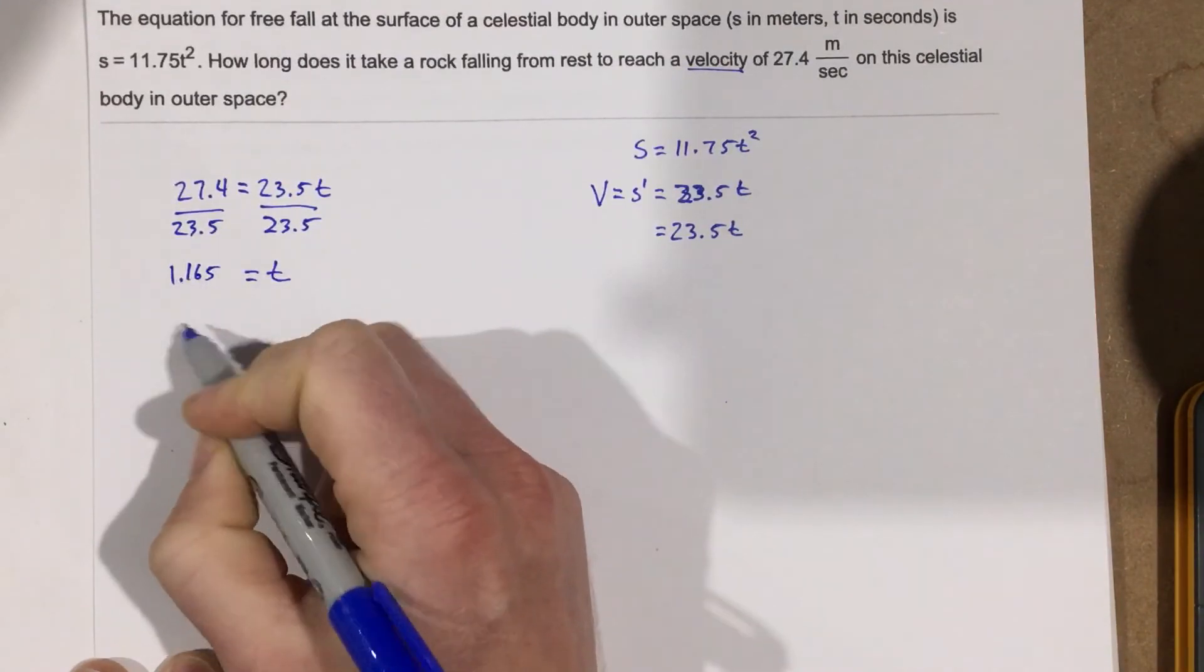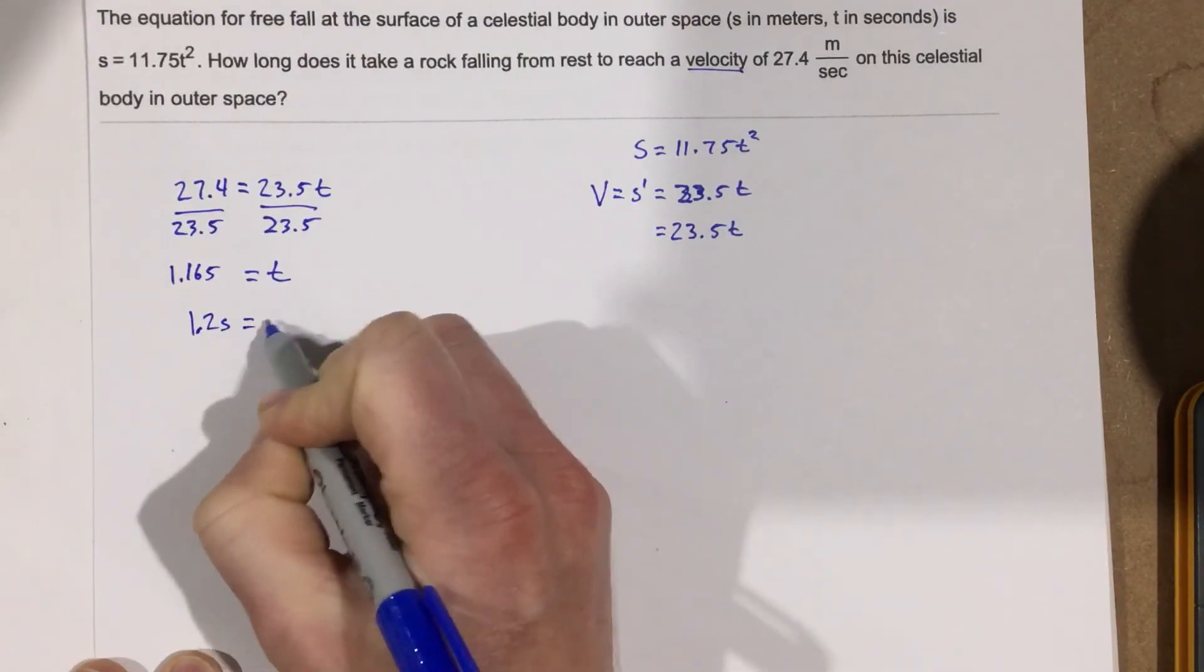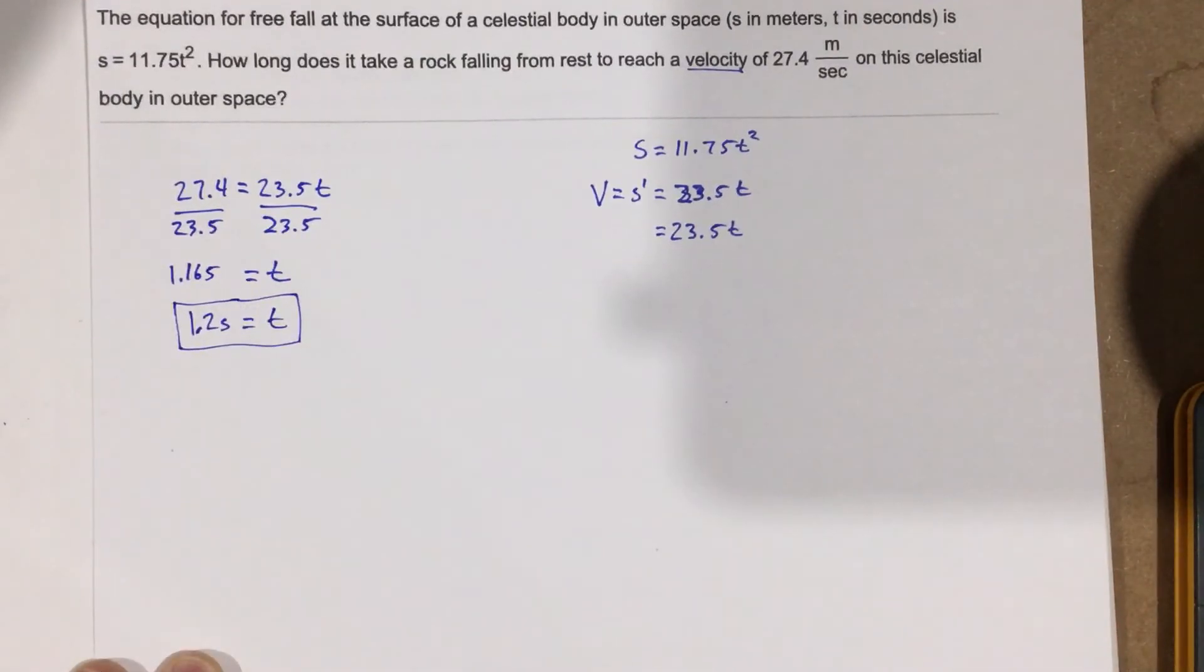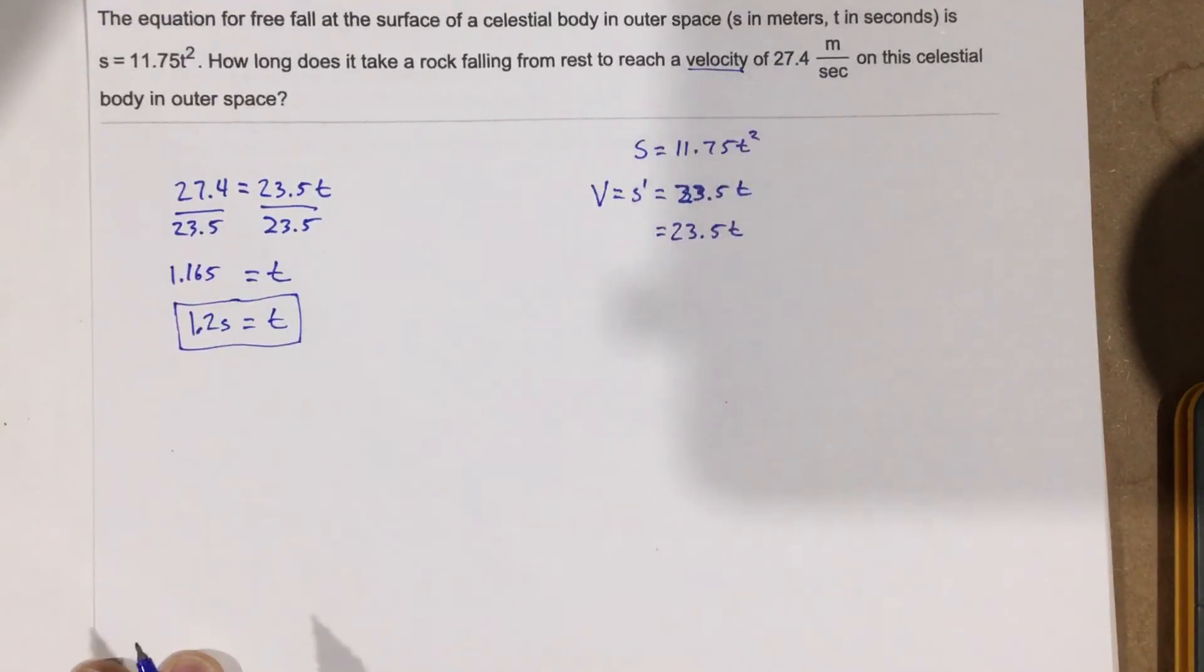Let's round that at the tenth place, so we end up with 1.2 seconds equals the time. And that's our answer. It takes 1.2 seconds for us to go from 0 to 27.4 meters per second.